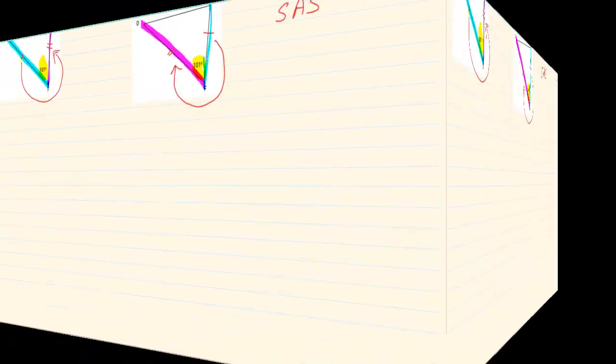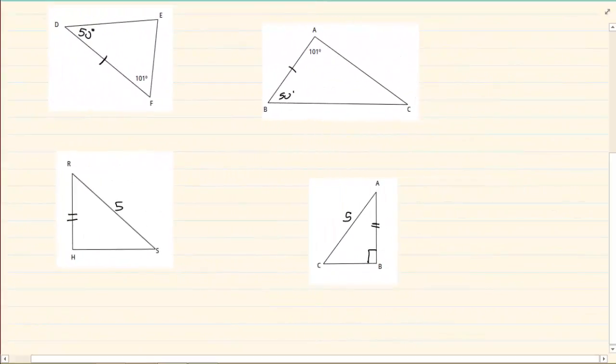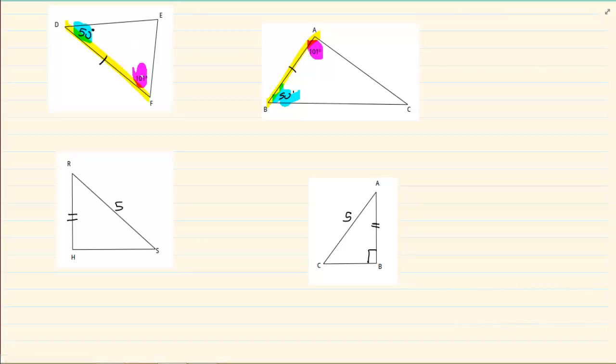The next one is where we have an angle is the same, and then a side, and another angle. So we have angle side angle.